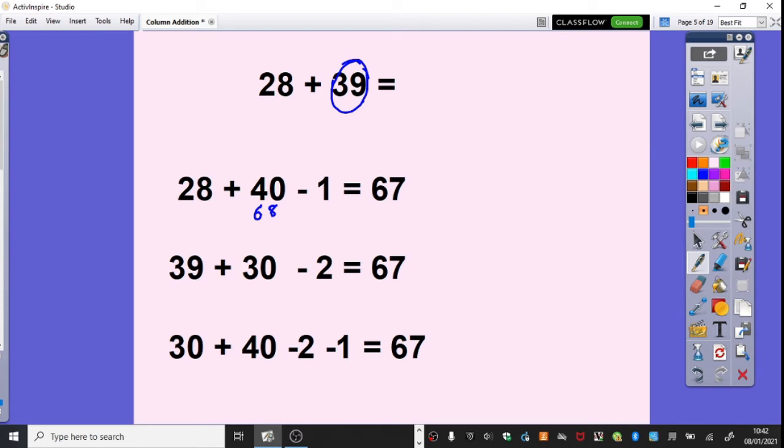But obviously, also 28 is very close to 30. So we could do 39 add 30, which would obviously give us 69. But this time, we've added on 2 too many, so we need to subtract 2.